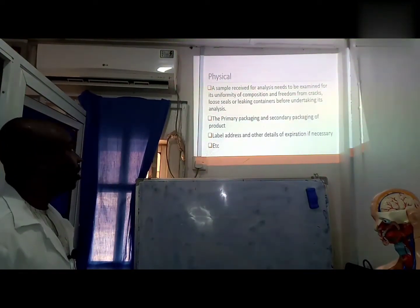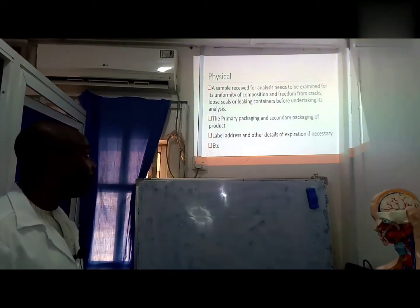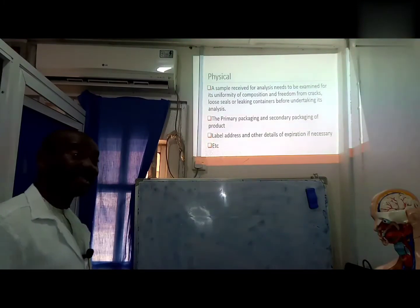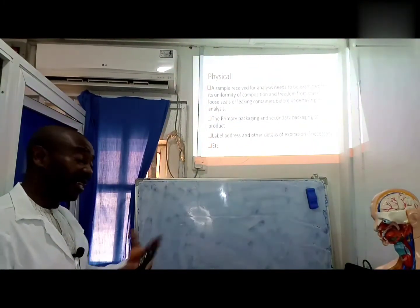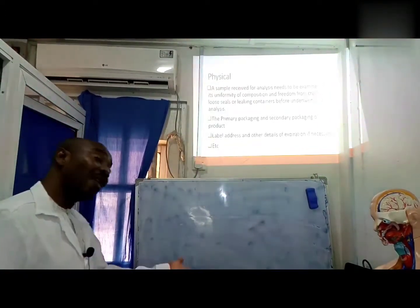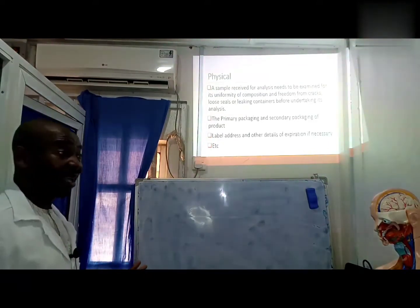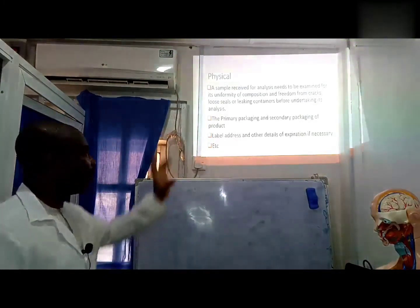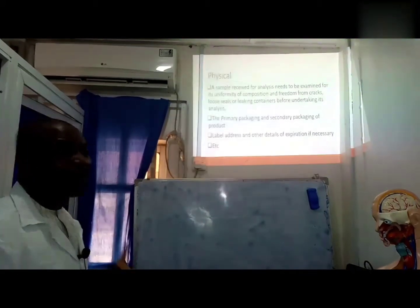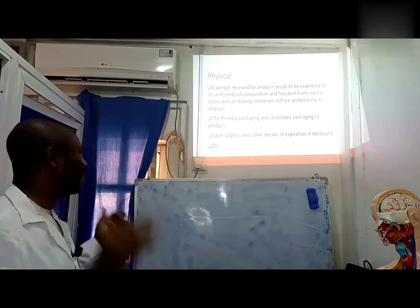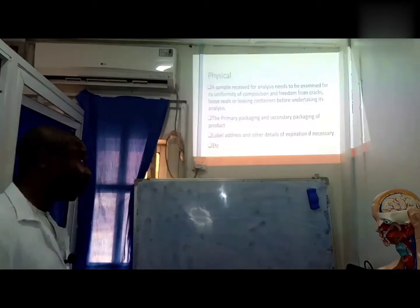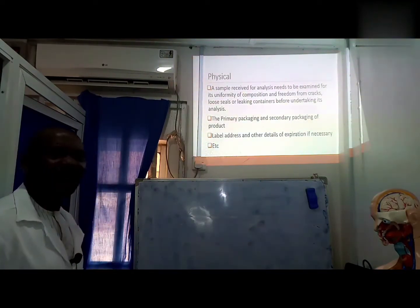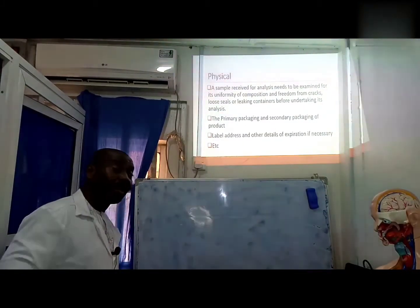For physical analysis, the sample is received and needs to be examined for its uniformity of composition and freedom from cracks, leaks, or leaking containers before undertaking its analysis. Some water companies present their samples with leakages, and that one can be rejected from scratch because it shows that any other thing can creep into that water. The primary packaging, secondary packaging, labels, addresses, expiry dates, and other details are very important.